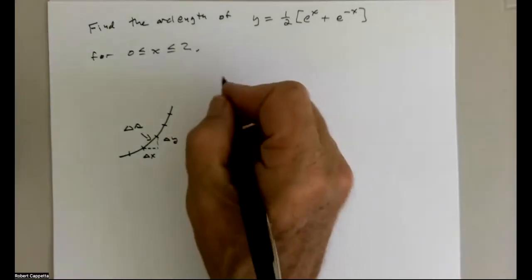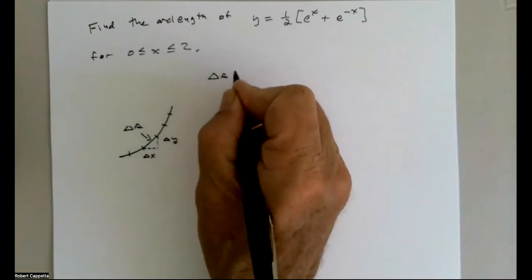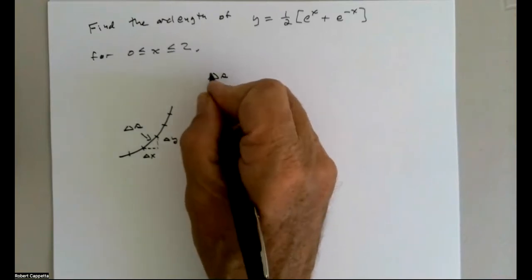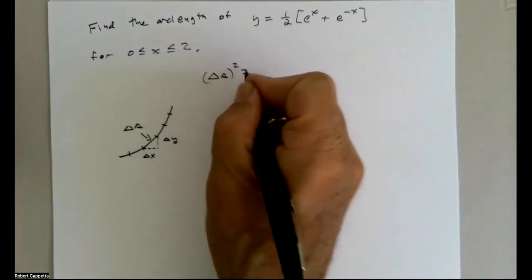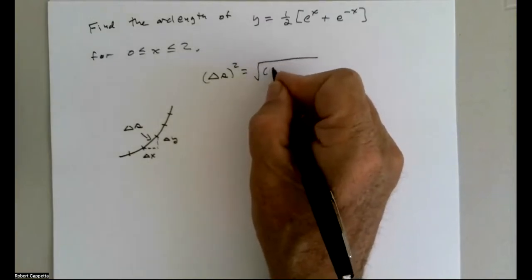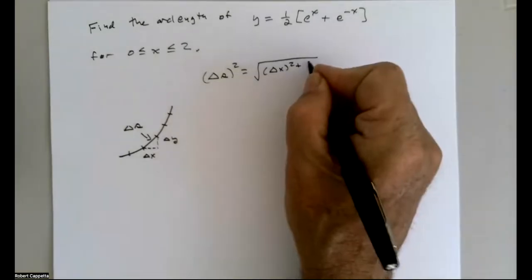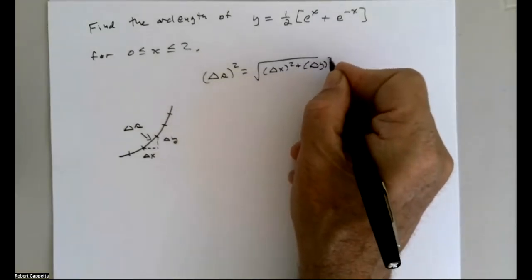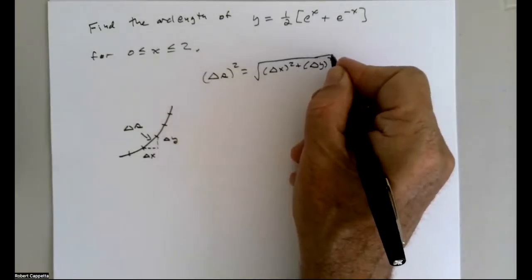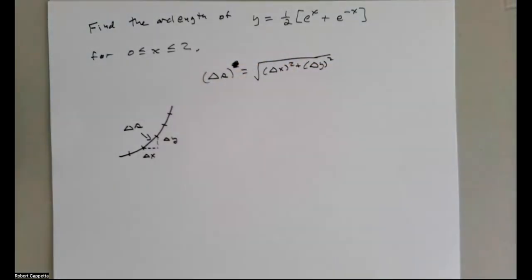Knowing that, we have Pythagoras, which tells us that ds squared is dx squared plus dy squared. If it's small enough, it's virtually linear — that's one of our fundamental concepts in calculus. So the change in s is the square root of dx squared plus dy squared.